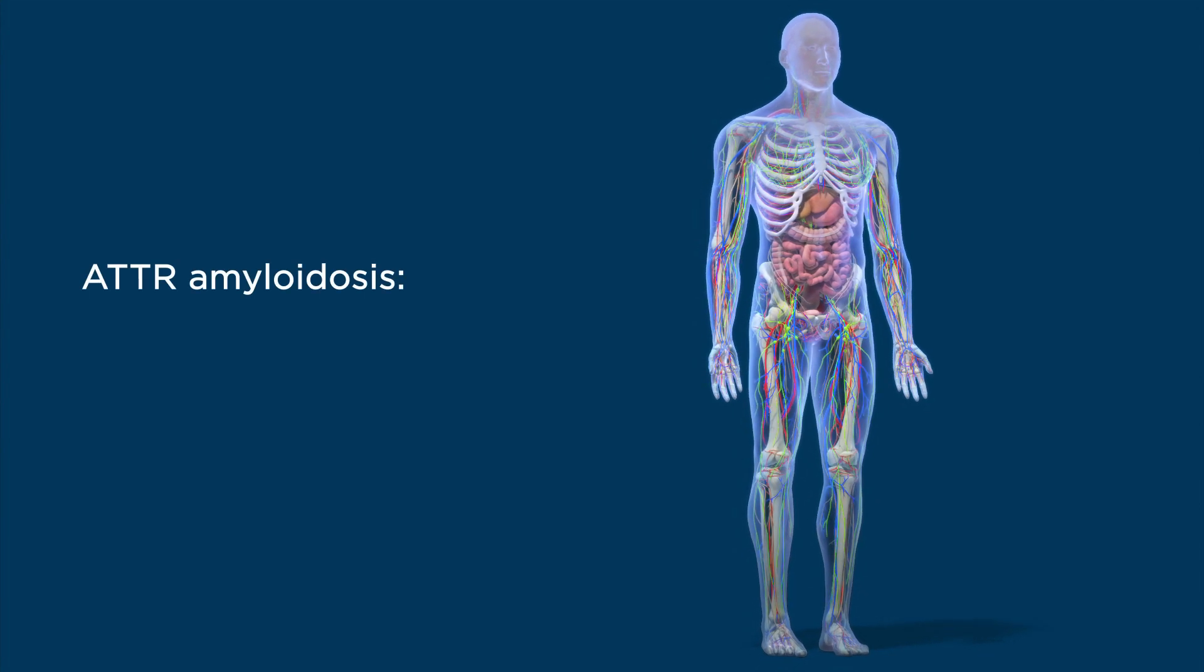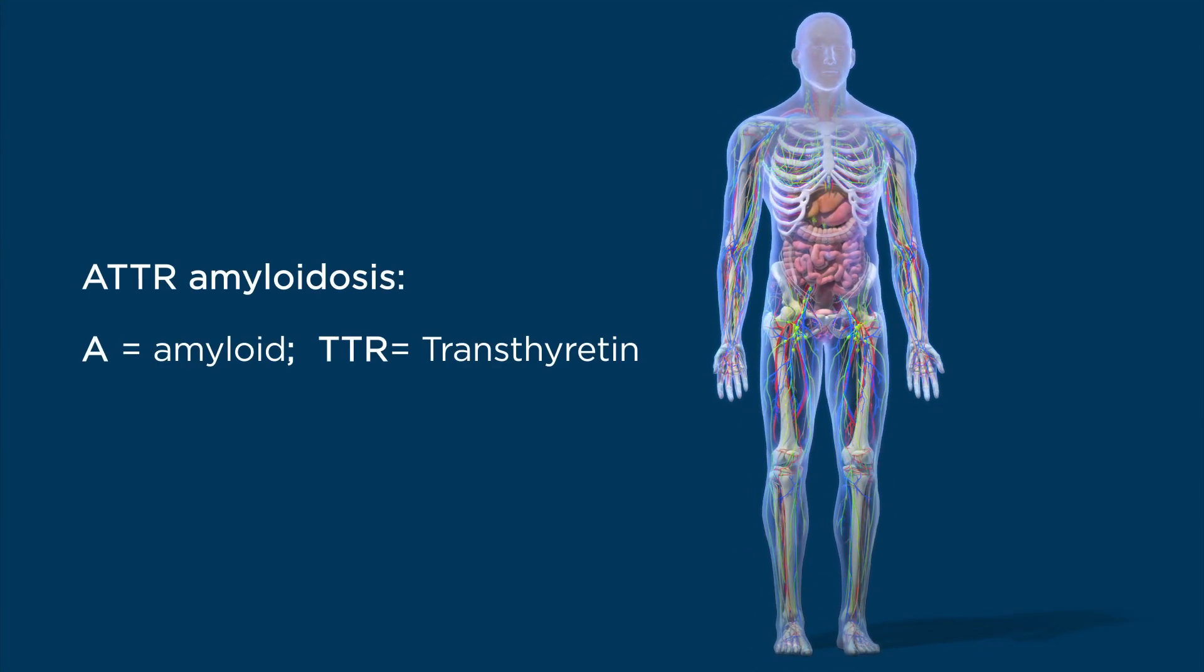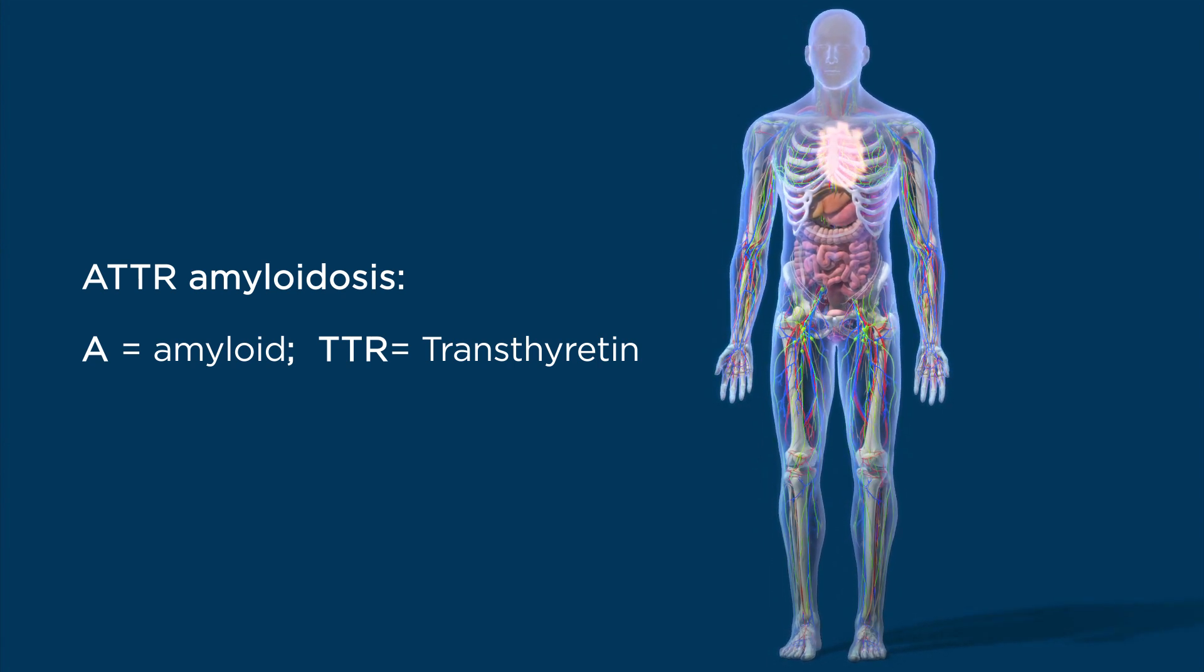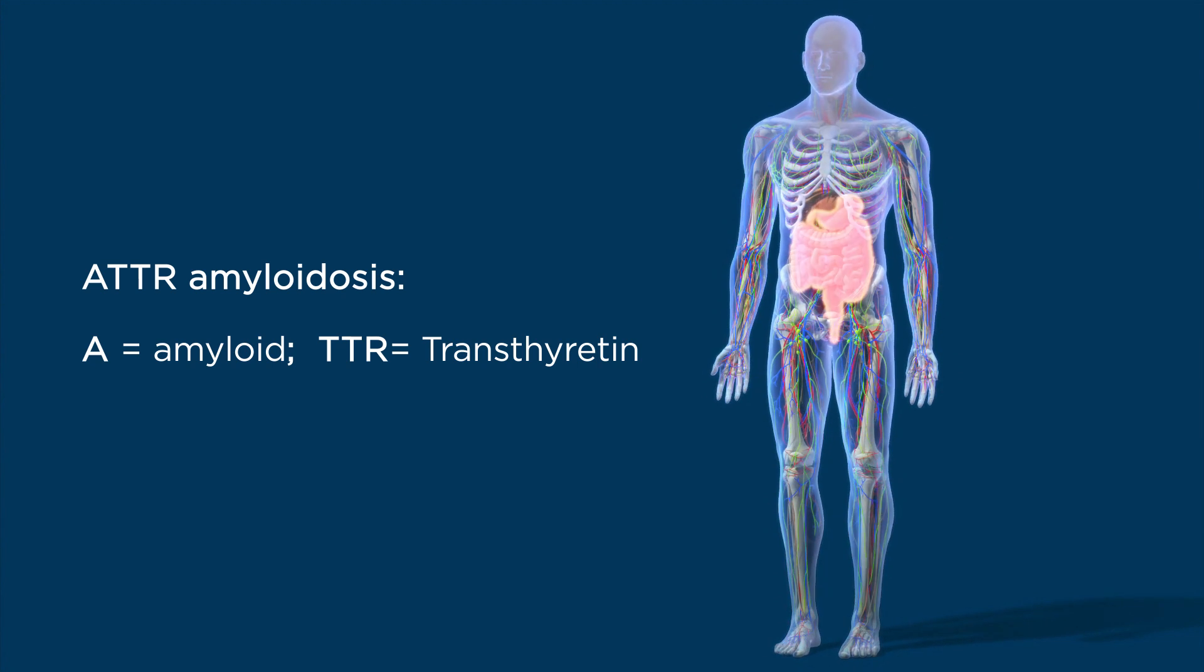ATTR amyloidosis is caused by the misfolding of a protein called transthyretin or TTR, which aggregates and deposits as amyloid in various tissues and organs.